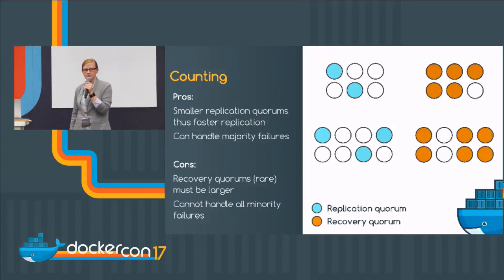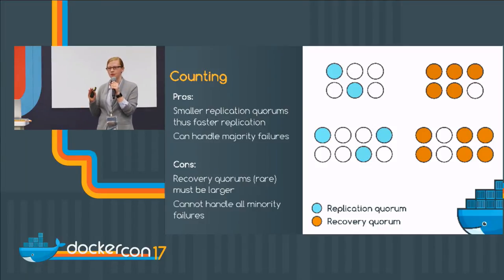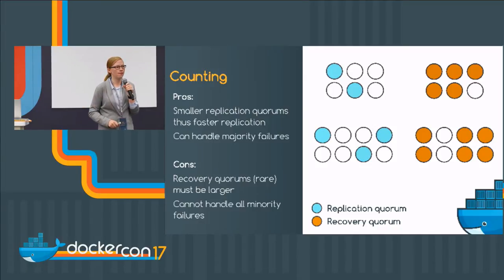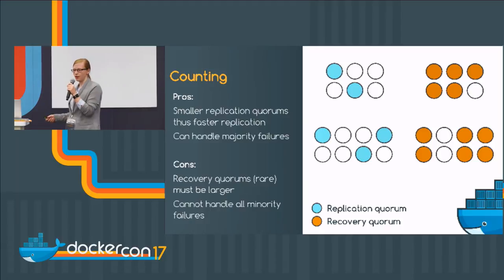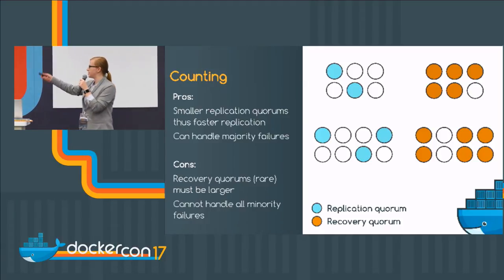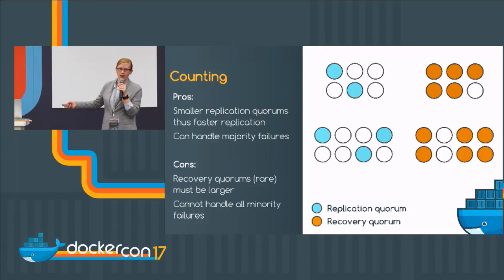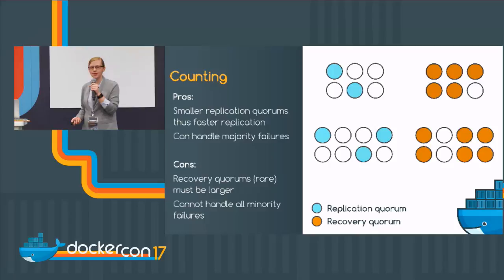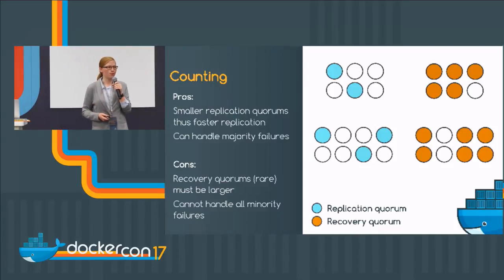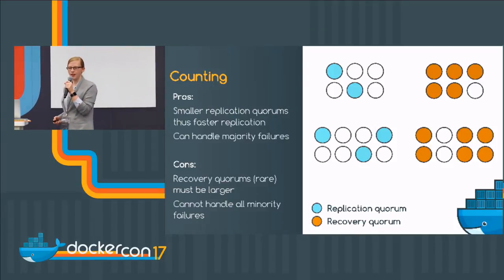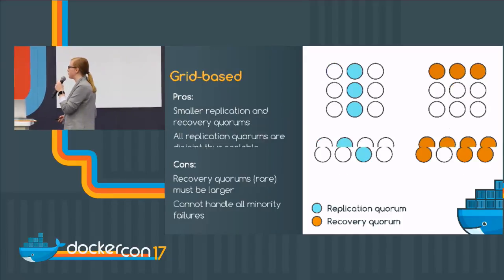And then we use five nodes when it comes to recovery. So what we've done is made the steady state — the thing we're doing most of the time — less expensive, and put more work into the recovery state. You can see this again for eight nodes. You can come up with any system you like, as long as the recovery quorums will intersect with the replication quorums.